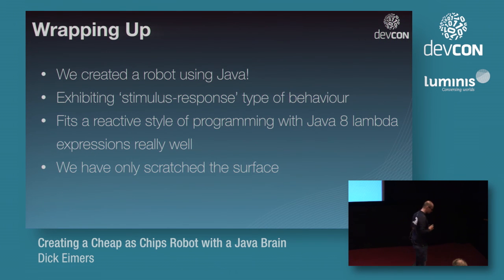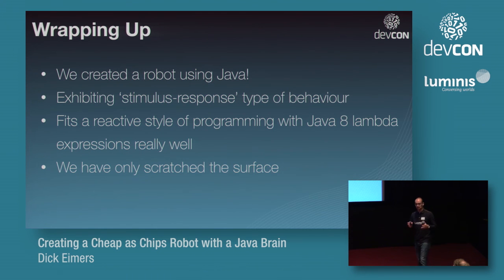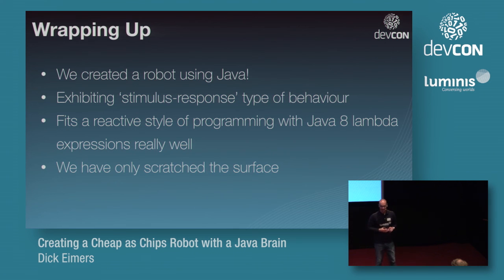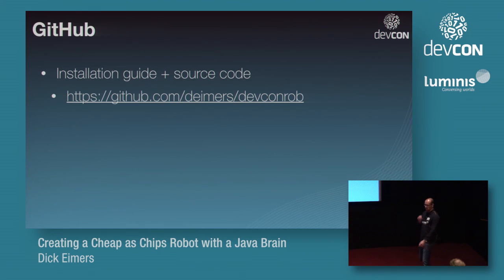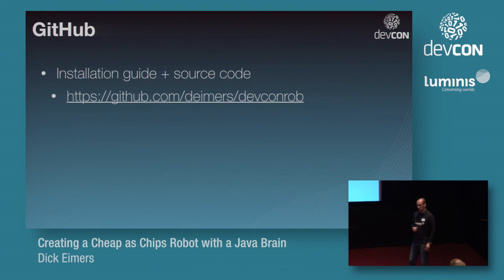To wrap things up: we did create a robot using Java. It exhibits stimulus-response behavior and fits the reactive style of programming with Java 8 lambda expressions really well. We've only scratched the surface — robotics is a vast subject; robots are on the moon, and an ultrasonic distance sensor won't work in space for obvious reasons. If you'd like to do this yourself, I've put the code on my GitHub page along with an installation guide to prepare your Raspberry Pi so it can act like this robot.